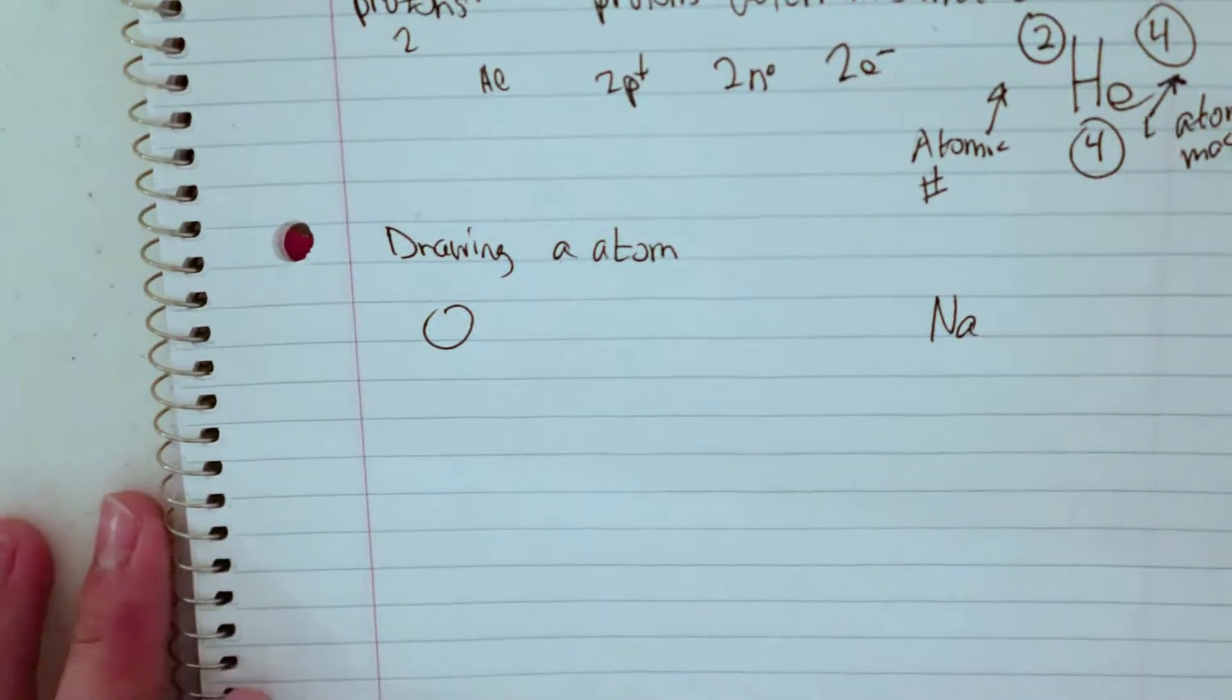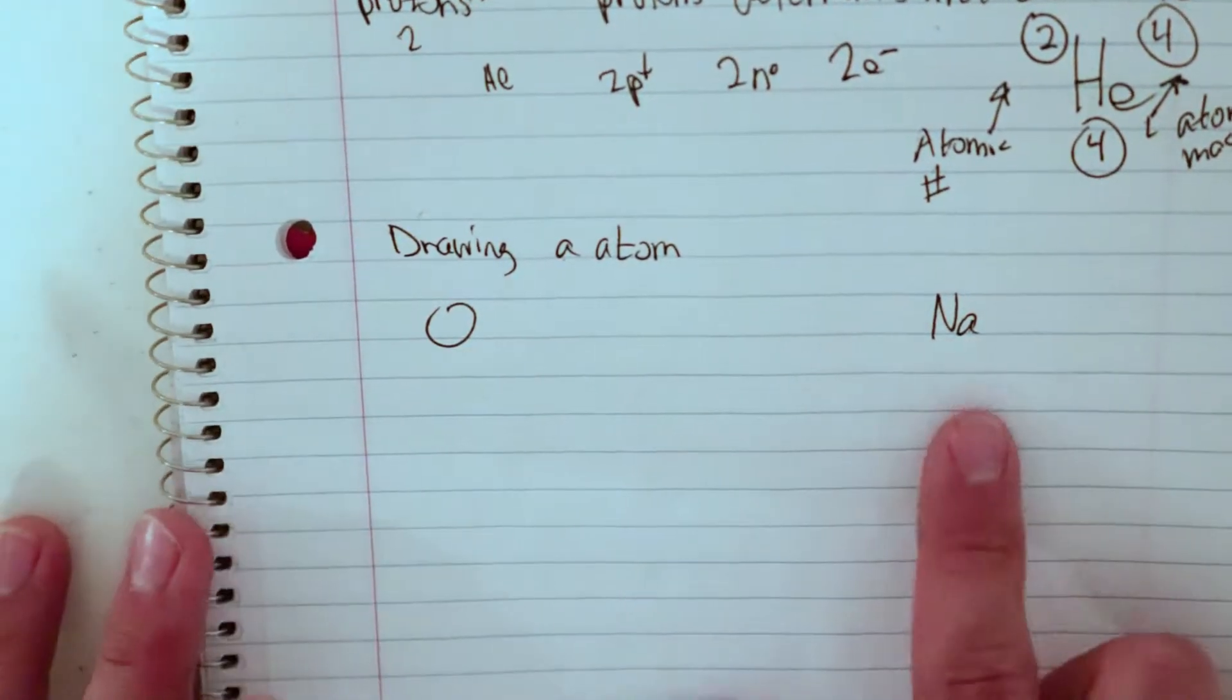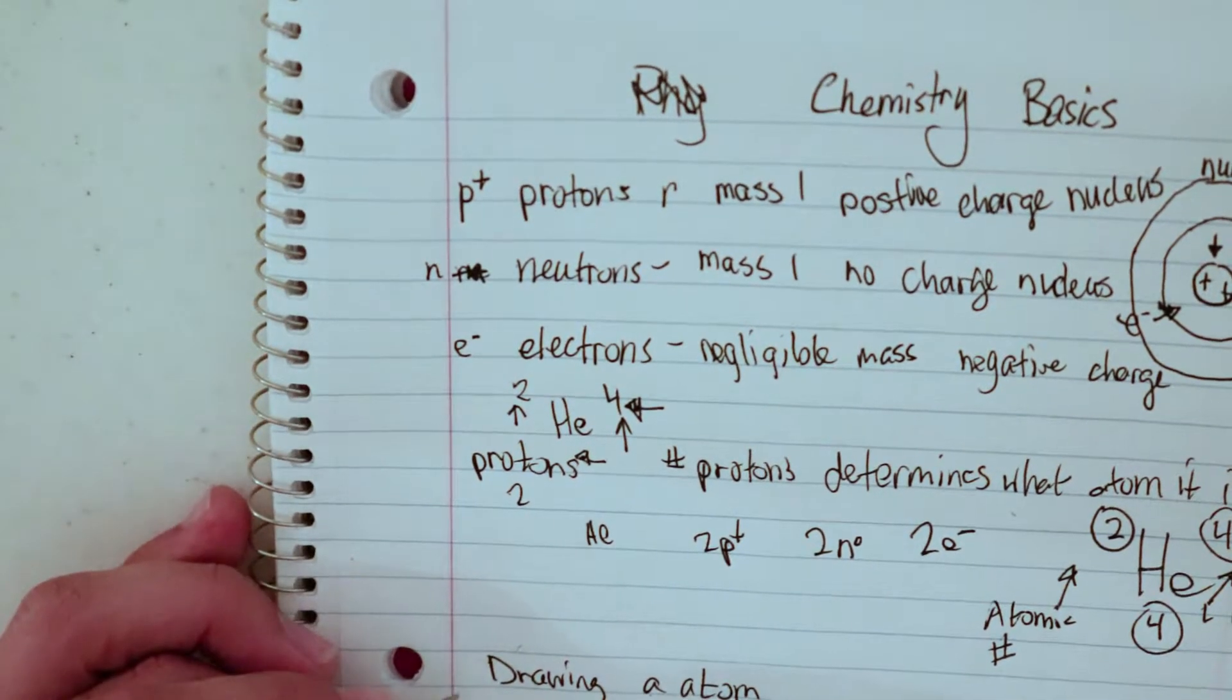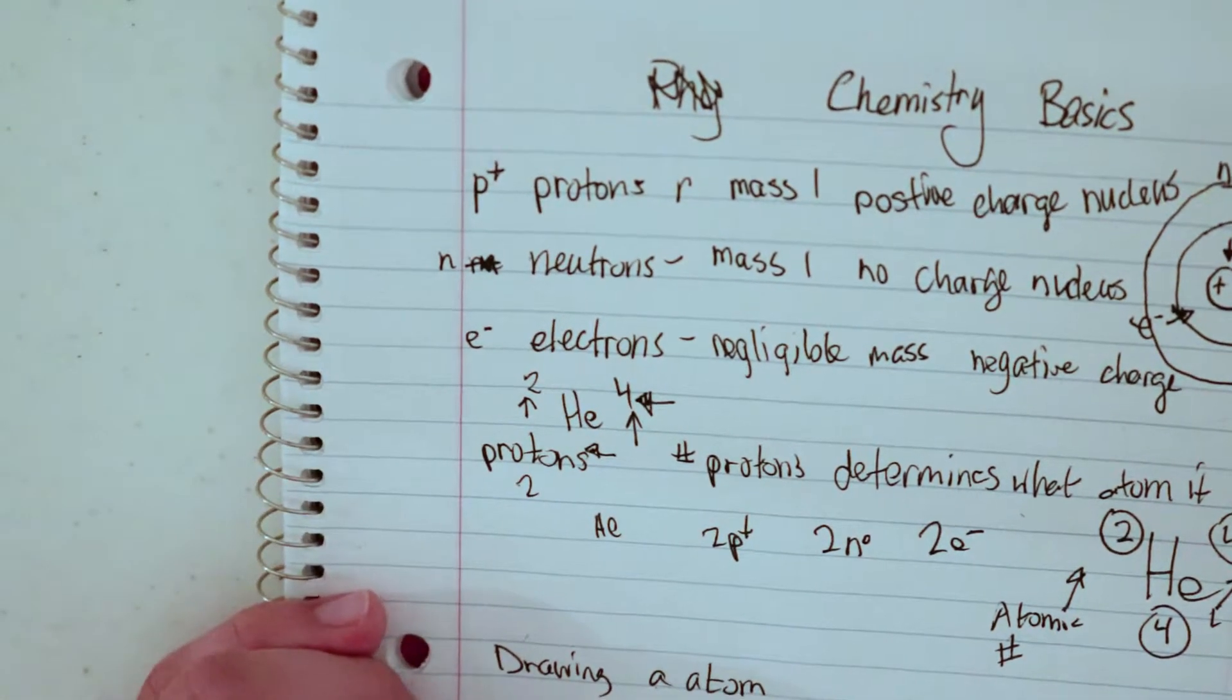Okay, today I'm going to be talking about how to draw an atom. I want to be drawing oxygen and sodium here. Oxygen has the atomic number of 8 and it has the atomic mass of 16.